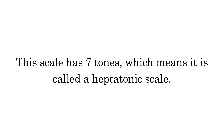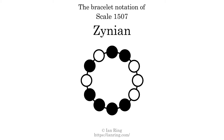This scale has 7 tones, which means it is called a heptatonic scale. This is a bracelet notation diagram of scale 1507. The shaded circles represent tones that appear in the scale, and they are read clockwise, starting at the top.